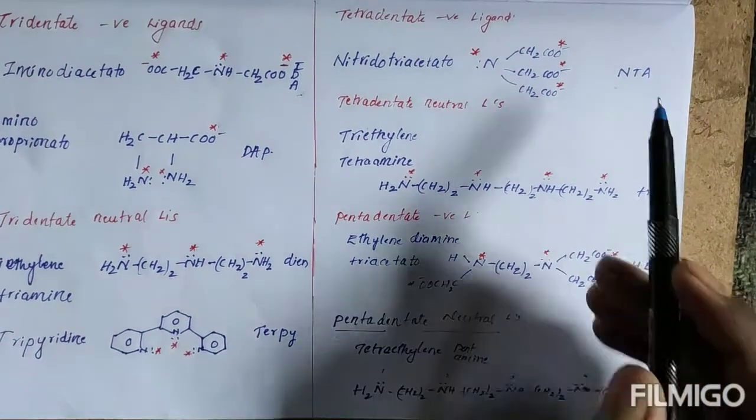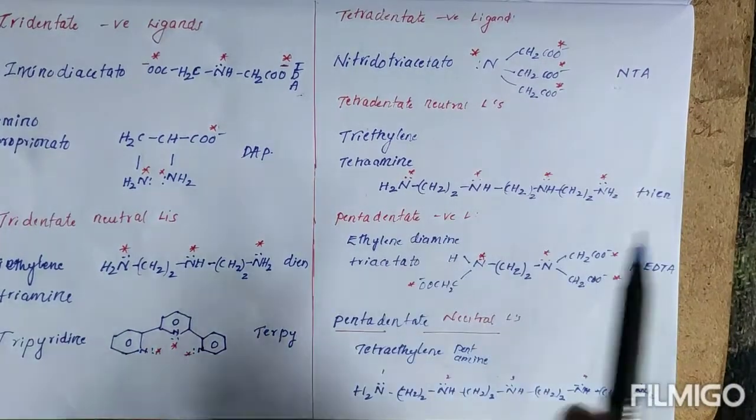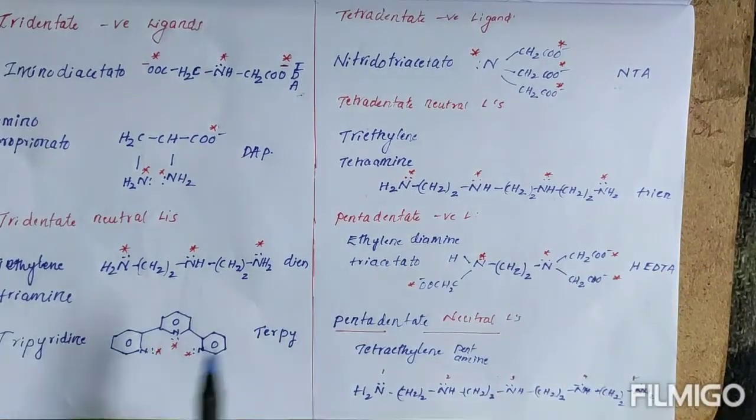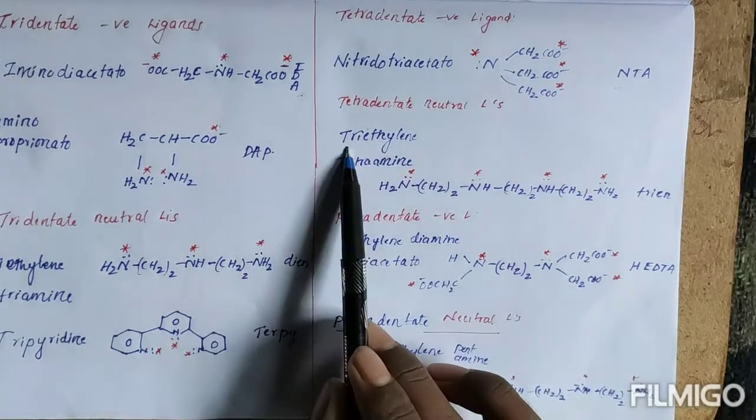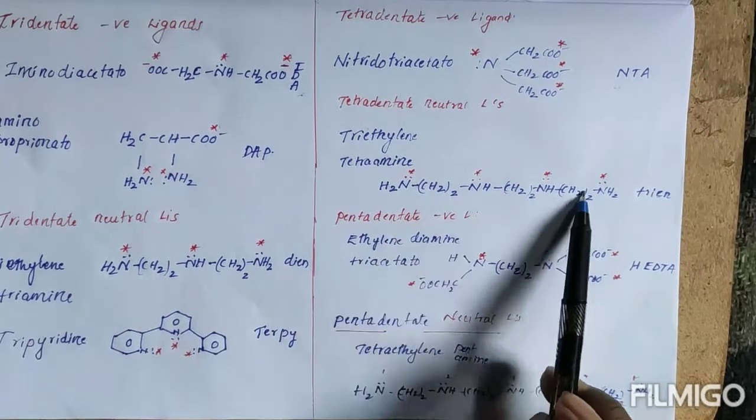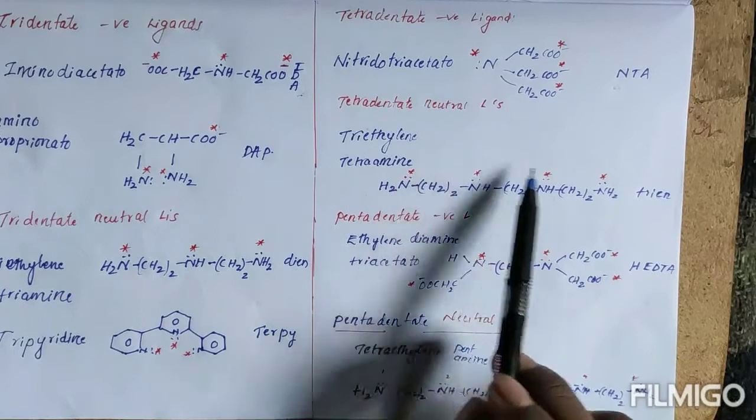Tetradentate neutral ligands. Triethylene tetramine: one, two, three triethylene, one, two, three, four tetramine. So triethylene tetramine, it is represented with triene.